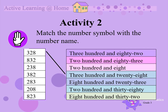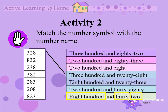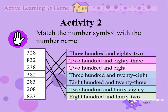Let's do the next example. 832. Look for a number name that starts with 800, then 30, and then 2. This is the matching number name. Continue matching the rest of the number symbols with the correct number names in the same way.